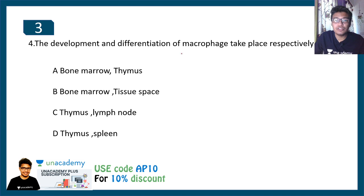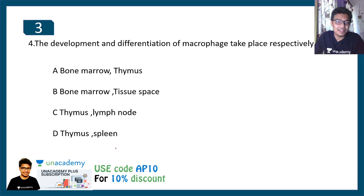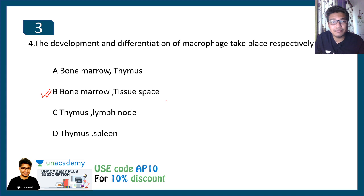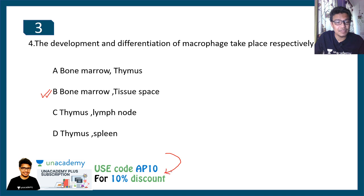The next question: the development and differentiation of macrophages takes place respectively in — A) bone marrow and thymus, B) bone marrow and tissue space, C) thymus and spleen. Pause and try to answer. The correct answer is bone marrow and tissue space. Basically, macrophages develop in the bone marrow as monocytes, then these monocytes enter the tissue space, get differentiated, and become macrophages. For the detailed concept, you can join the course using code EP10 on Unacademy or watch the YouTube playlist.